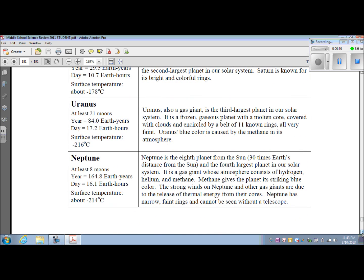Uranus. It has at least 21 moons. Its year is 84.0 Earth years. Its day is 17.2 Earth hours. And its surface is negative 216 degrees Celsius. Uranus, also a gas giant, is the third largest planet of our solar system. It is a frozen gaseous planet with a molten core, covered with clouds and encircled by a belt of 11 known rings, all very faint. Uranus' blue color is caused by the methane in its atmosphere.